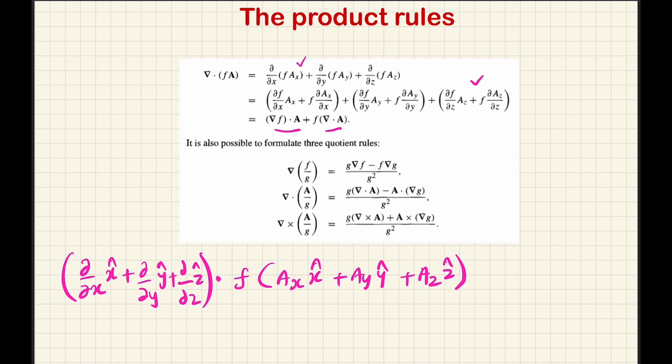The quotient rule: the gradient of f divided by g is similar to the ordinary derivative quotient rule. This completes the product rules, including the quotient rule, where you write it analogously to the ordinary derivative case.